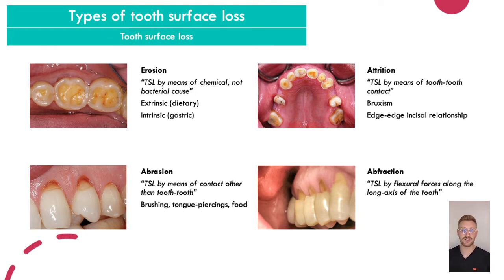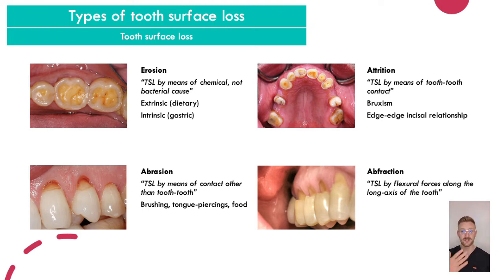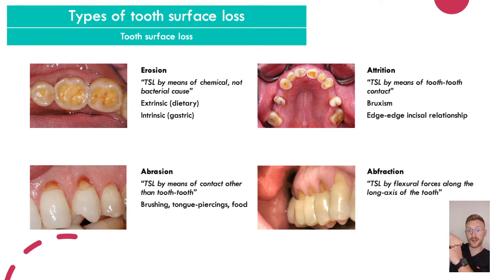Attrition is tooth wear from tooth-to-tooth contact. You have two types: attrition where incisors hit each other — commonly in an edge-to-edge occlusion causing chipping of the anterior teeth — and bruxism, where a patient grinds their teeth together and they wear down.